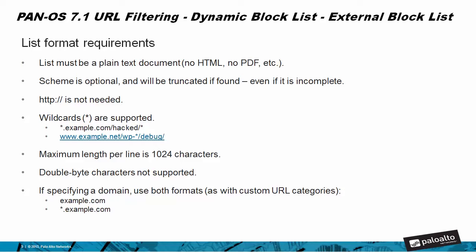Wildcards are supported — for example, *.example.com/hacked/* or www.example.net/wp-*/ debug, and can be utilized in many ways. Maximum line length is 1,024 characters. Double-byte characters are not supported. When specifying a domain, use both formats: example.com as well as *.example.com if you want to catch the entire domain.